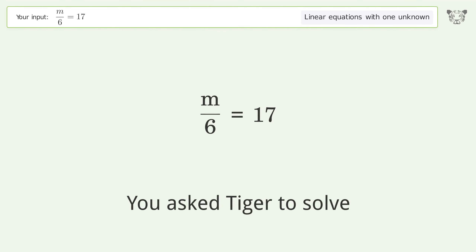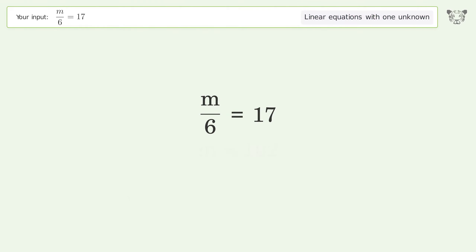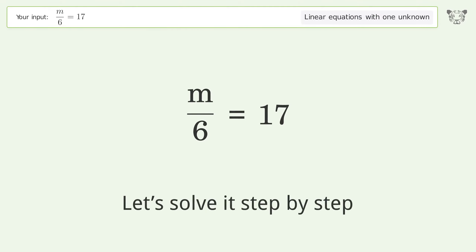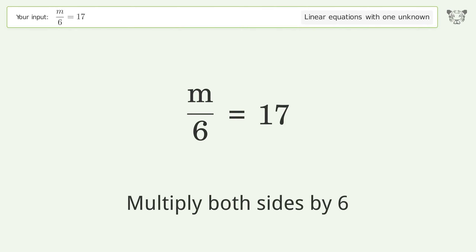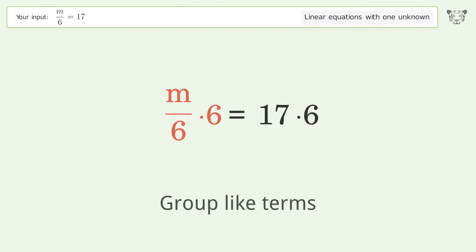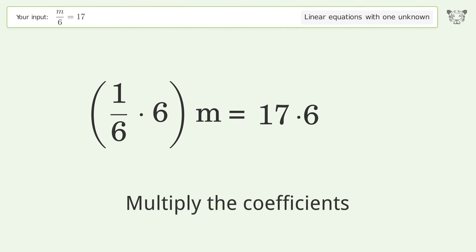You asked Tiger to solve this - it deals with linear equations with one unknown. The final result is m equals 102. Let's solve it step by step: isolate the m, multiply both sides by six, group like terms, multiply the coefficients.